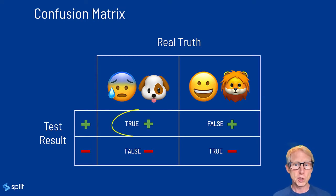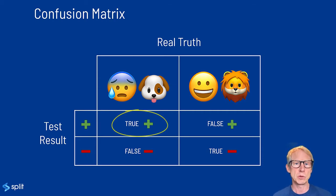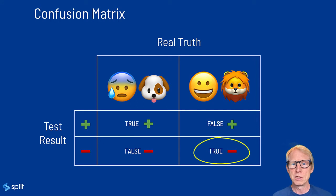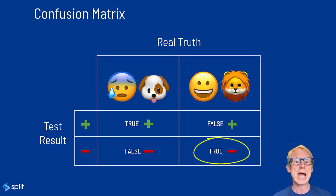The first is true positive: the truth is positive and the test predicts a positive — the person is sick and the test accurately reports this. Second, we have true negative: the truth is negative and the test predicts a negative — the person is not sick and the test accurately reports this. So those are the two trues.